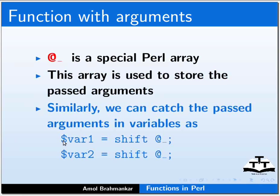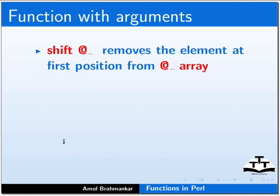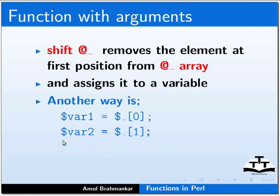Similarly, we can catch the passed arguments in variables as: $var1 = shift @_; and $var2 = shift @_;. The shift @_ function removes the element at the first position from the @_ array and assigns it to a variable. Another way is: $var1 = $_[0]; which is similar to fetching elements of the @_ array using an index.